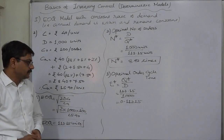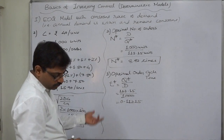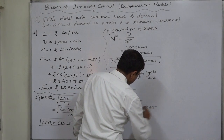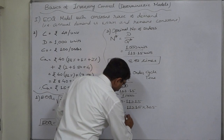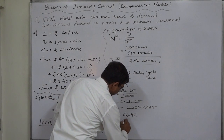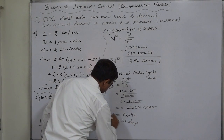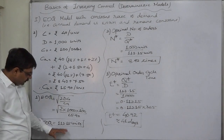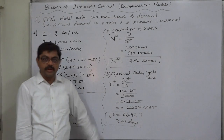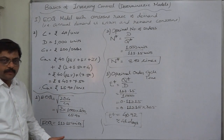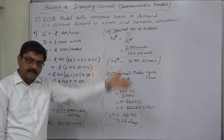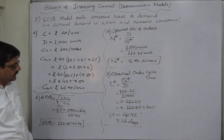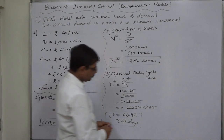Number 3 is the optimal cycle time P*. We need to convert N* into number of days, so we divide 365 by N*. Multiplying by the total number of days in a year (365 under normal circumstances), it comes to 40.92, that is approximately 41 days. This is the gap between two consecutive orders — we place the first order of 112.15 units, and exactly after 41 days we place another order of 112.15 units, and so on throughout the year, making approximately nine orders.